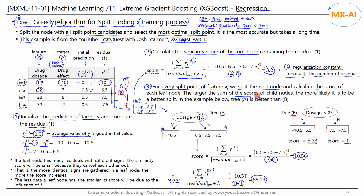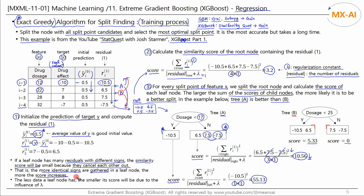The larger the sum of the scores of child nodes, the more likely it is that this split is optimal. In this example, tree A is better than tree B. If a leaf node contains many residuals with different signs, the similarity score will be smaller because they cancel each other out. Conversely, more residuals of the same sign result in a higher similarity score. Also, the smaller the number of residuals in a leaf node, the smaller the score, because the influence of lambda increases.